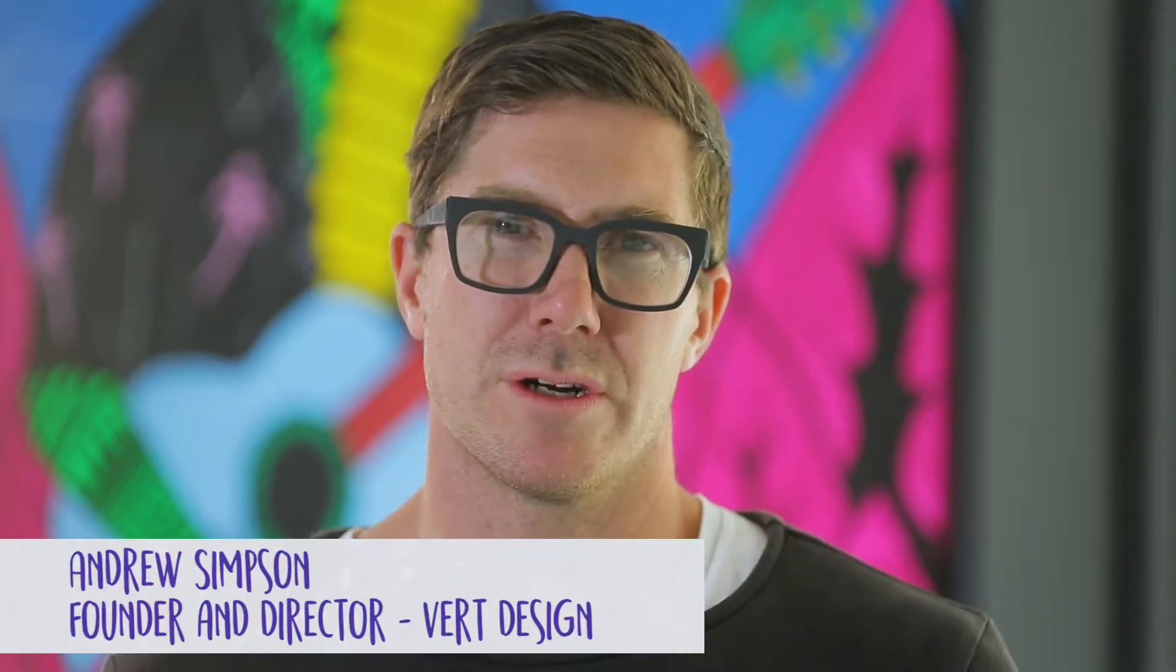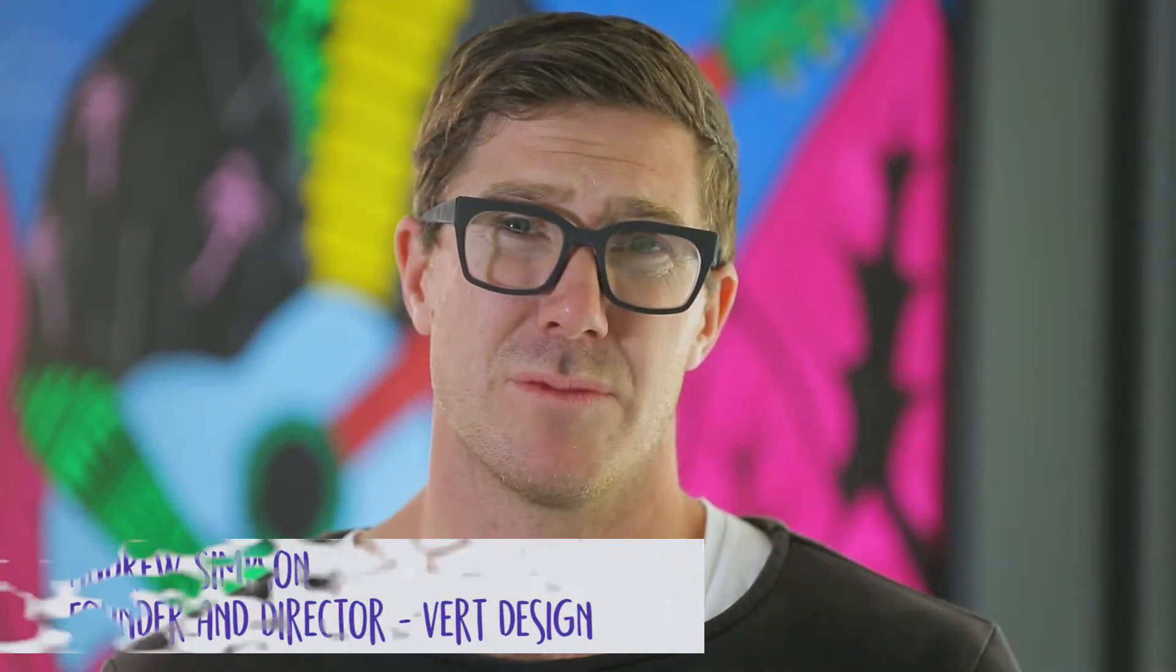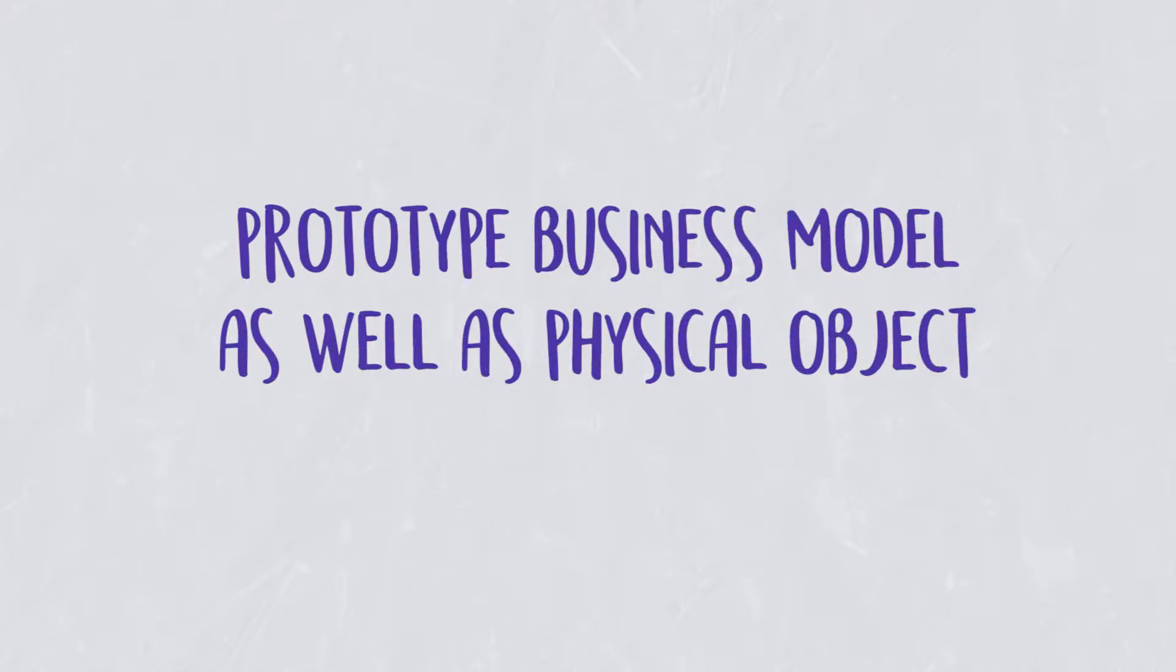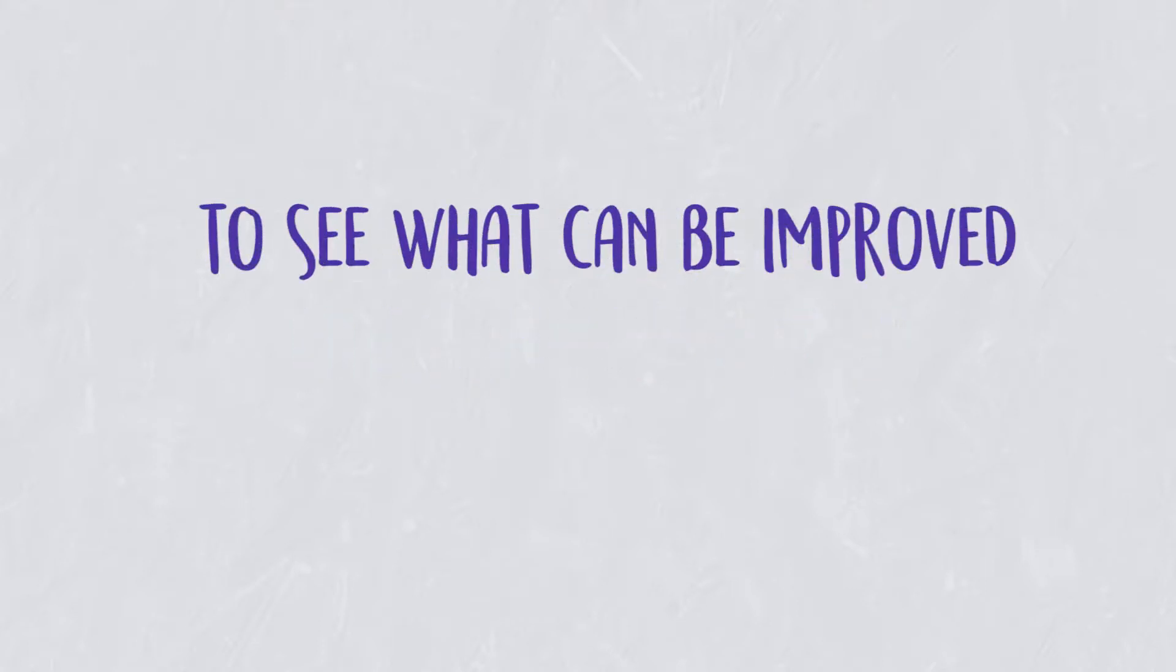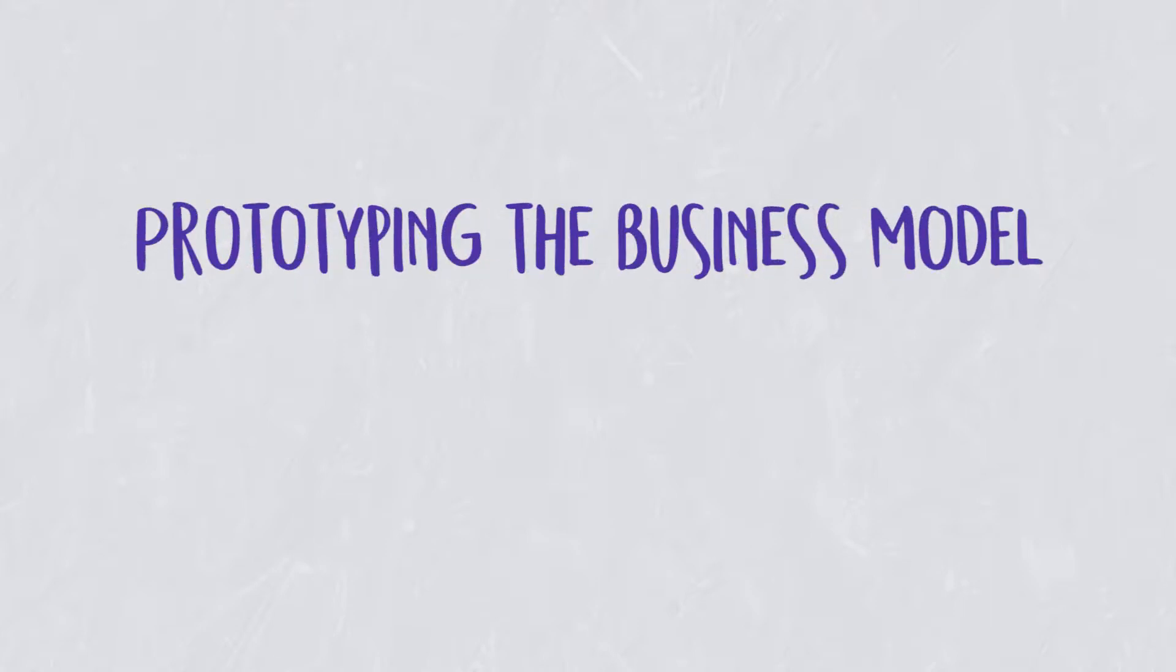Often as part of the strategy of prototyping, we're prototyping the business model as much as the physical object. In some instances, we're producing it to a production scale or small production scale so we can test what this means in terms of secondary processes. In other instances, we're literally prototyping the business model.